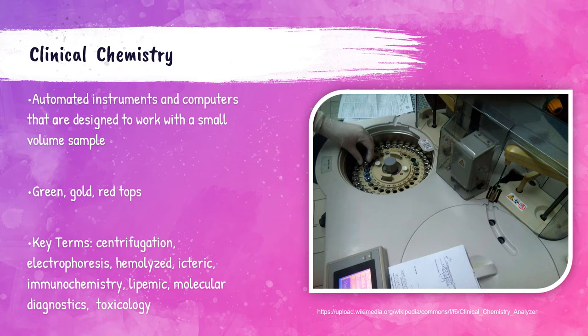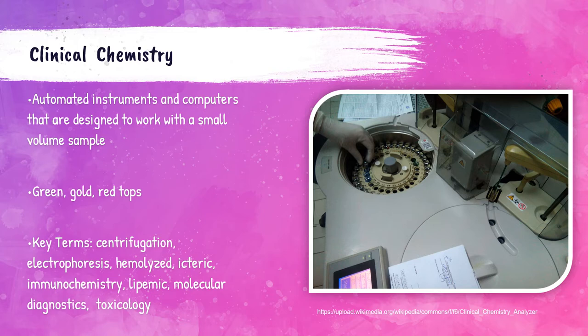Electrophoresis is a technique used to separate proteins based on their size and electrical charge. Hemolyzed blood is when red blood cells have ruptured — in phlebotomy this is caused by incorrect needle size, improper tube mixing, excessive suctioning, prolonged tourniquet use, or difficult collections. Icterus means jaundice, a yellowing of the skin that can cause a yellowish-greenish-brownish tint to serum or plasma. Immunochemistry is a chemical analysis using antigen-antibody interactions. Lipemia is when a blood sample contains a high amount of lipids, causing the plasma or serum to appear cloudy white. Molecular diagnostics performs genetic testing, and toxicology is the study of poisons.